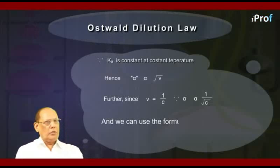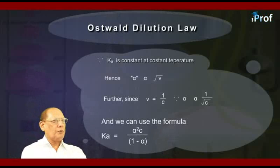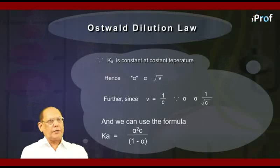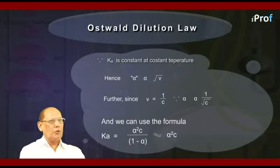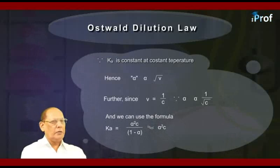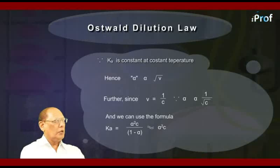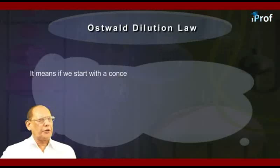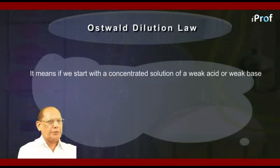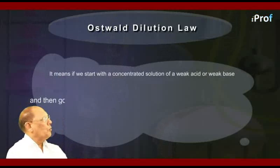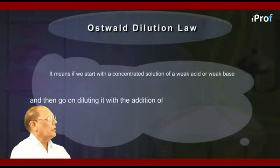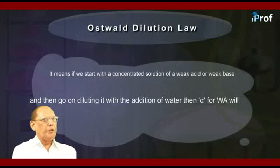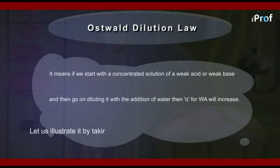We can use the exact equation Kₐ = alpha²C / (1 − alpha) for exact calculation of alpha for a weak acid, and likewise Kb = alpha²C / (1 − alpha) for a weak base. In the approximate form, which is widely used, we can write Kₐ ≈ alpha²C. This means if we start with a concentrated solution of a weak acid or a weak base and go on diluting the solution with the addition of water, then alpha for the weak acid or weak base will keep increasing.